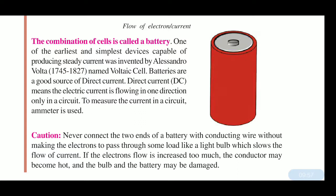One of the earliest and simplest devices capable of producing steady current was invented by Alessandro Volta, called the voltaic cell. Batteries are a good source of direct current (DC). AC stands for alternating current, while DC is what we get from a battery — in DC, the current flows in one particular direction only in a circuit.